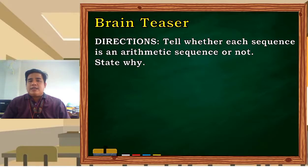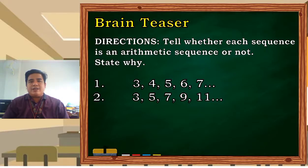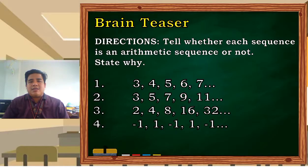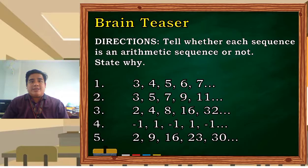Before we go deeper in our discussion of arithmetic sequence, let us see if you could tell whether each sequence is an arithmetic sequence or not based on our definition of arithmetic sequence. First: 3, 4, 5, 6, 7. Next: 3, 5, 7, 9, 11. Next: 2, 4, 8, 16, 32. Negative 1, 1, negative 1, 1, negative 1. And last one: 2, 9, 16, 23, and 30. Which among these five is an arithmetic sequence and which is not? Have you answered already?